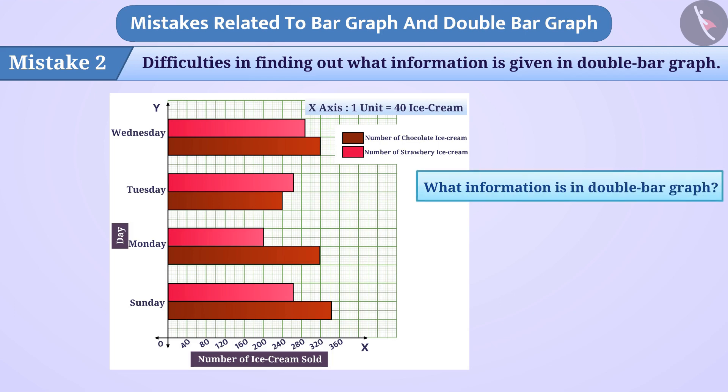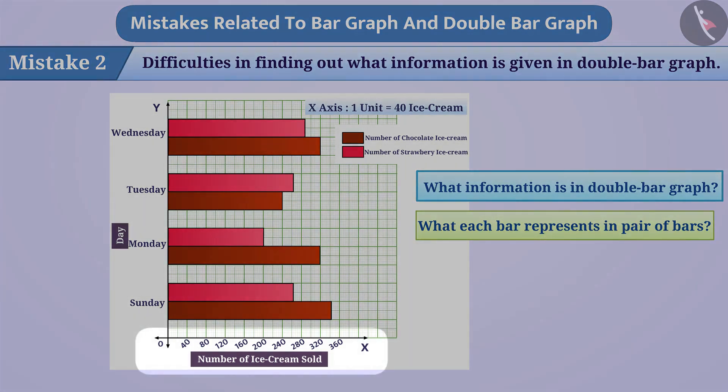To find out what information is shown in a double bar graph, it is necessary to look at what is represented on the x-axis and the y-axis as well as understanding what each bar represents in a pair of bars. Here, the number of ice creams sold is shown on the x-axis and the days are shown on the y-axis.